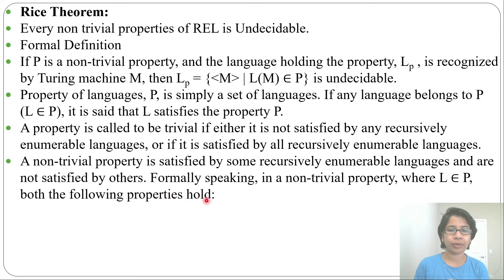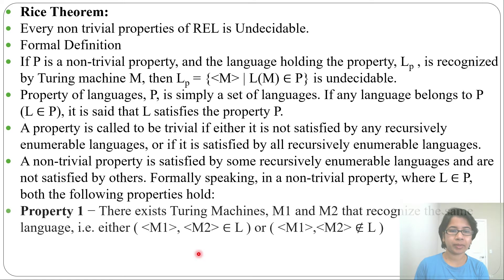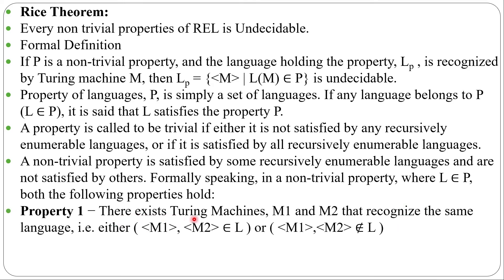Formally, in a non-trivial property where L belongs to P, the following holds. First property: there exist Turing machines M1 and M2 that recognize the same language, where either both M1 and M2 belong to L or both M1 and M2 do not belong to L.